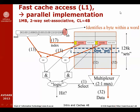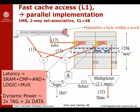Here's an example of an implementation of an associative cache where we access the left and right data at the same time, bringing out both address tags and both pieces of data simultaneously. The latency is SRAM plus compare plus logic max. The dynamic power is proportional to the amount of data read out — roughly two times the tag size and two times the data size for a two-way set-associative cache. For a four-way cache, those numbers would both change to four.